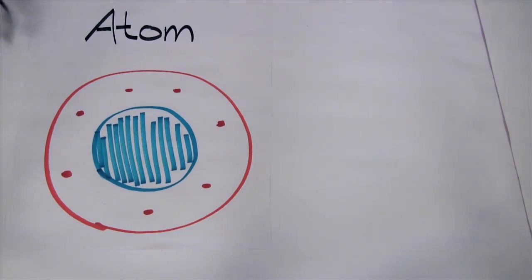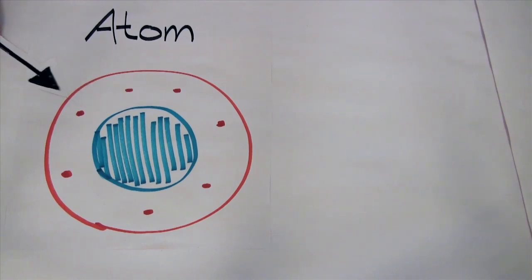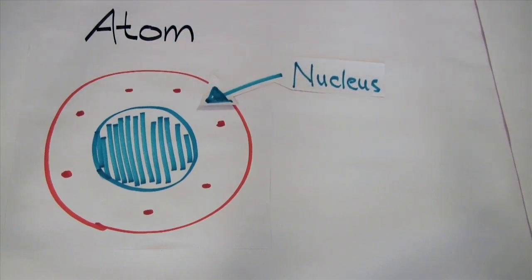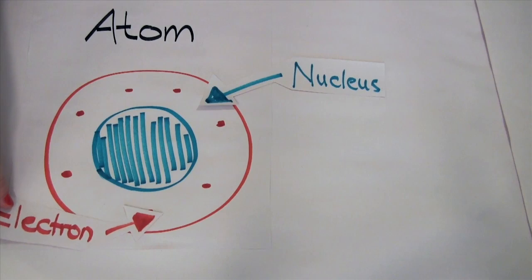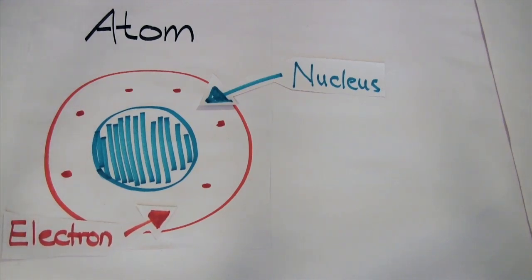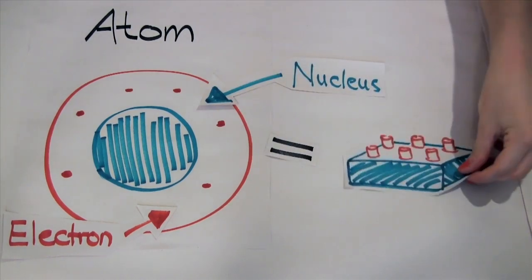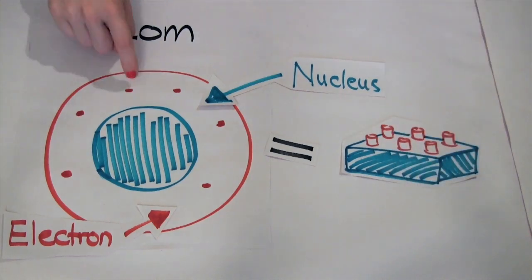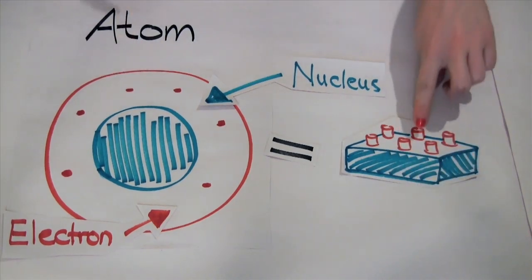An atom has a central core and an outer shell. We call the central core of the atom the nucleus. The outer shell surrounding the nucleus is made up of particles called electrons. We can represent the atom as a block whose nucleus is the base and electrons are the bumps.